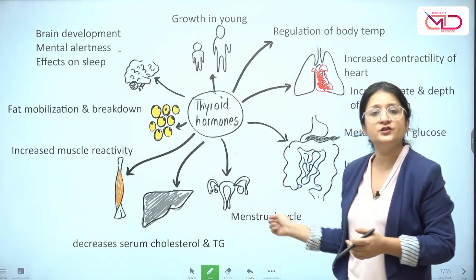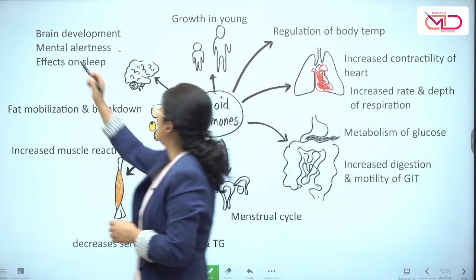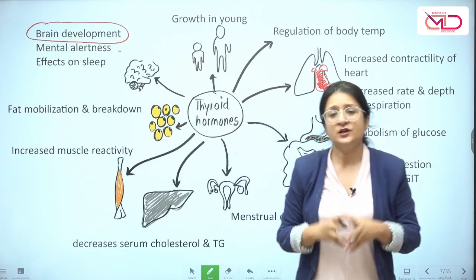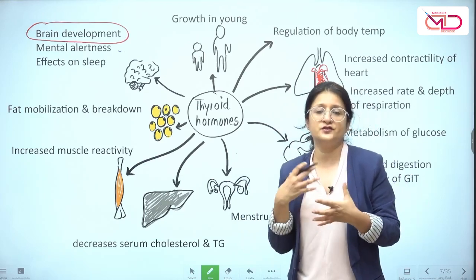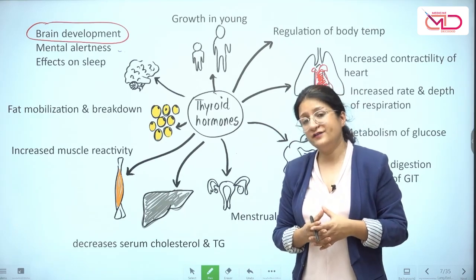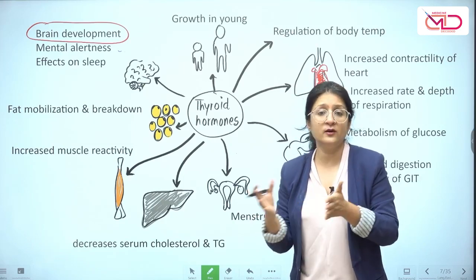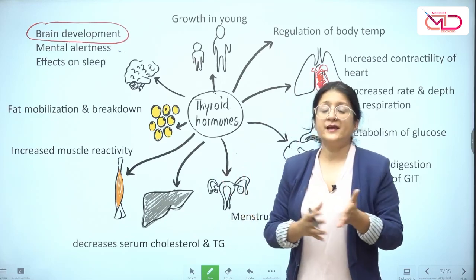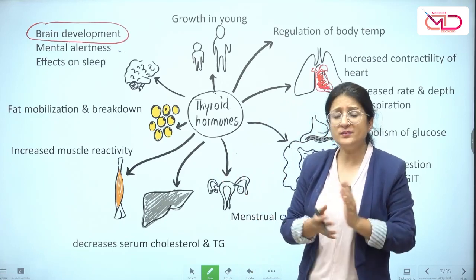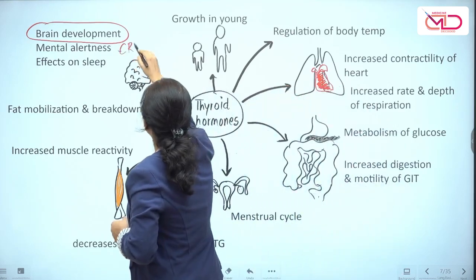We were discussing the variety of functions that thyroid hormones contribute to. It is very important and crucial in brain development during fetal life and infancy. If there is a fetus with deficiency of thyroid hormones, or severe deficiency in infancy, then brain development and psychomotor development will also be poor. There can be mental retardation, poor IQ, low IQ, and severe growth retardation — what we call cretinism.